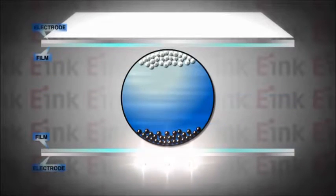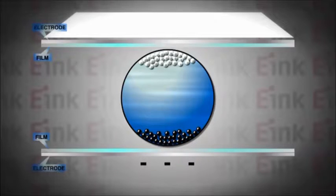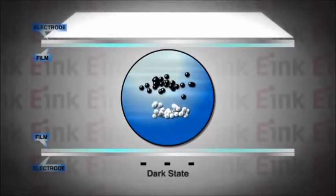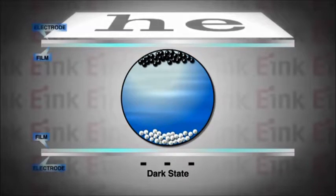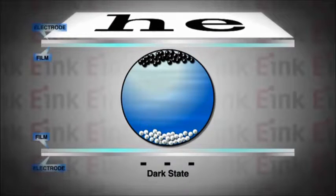When a negative electrical field is applied to the bottom of the film, the negative black particles are repelled to the top of the capsule. This changes the area on the top surface to black.